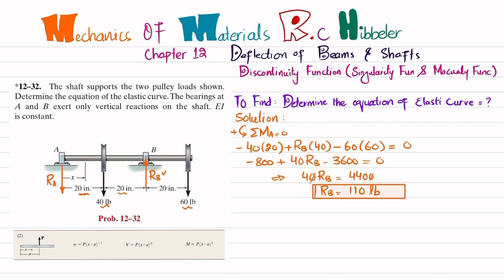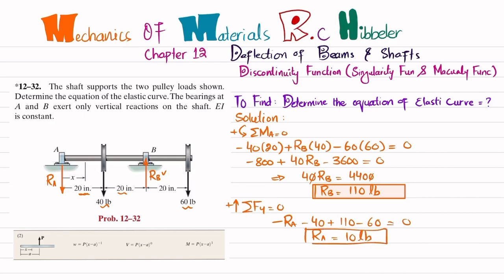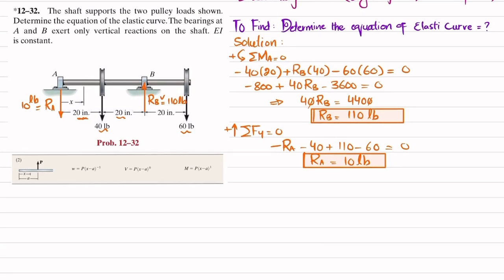We will find RA using the equation of equilibrium: sum of all forces in the y-direction equals zero, with upward forces positive. So minus RA minus 40 plus RB (110) minus 60 equals zero, giving RA equals 10 pounds. Now we have both reactions: RA is 10 pounds downward and RB is 110 pounds upward.